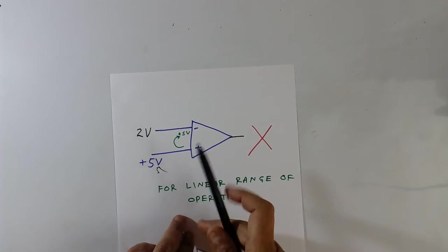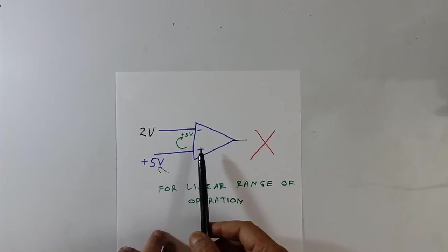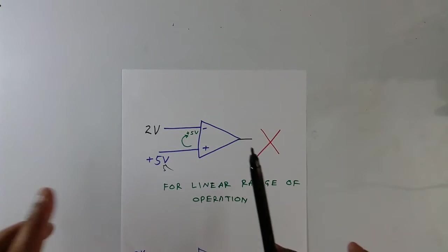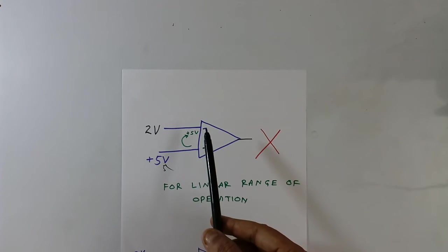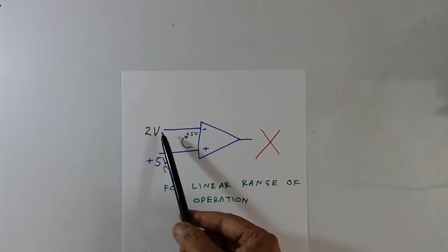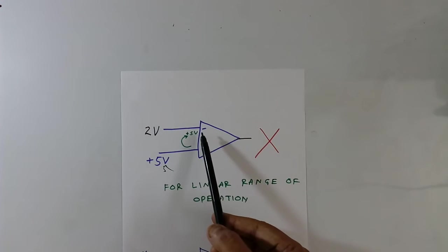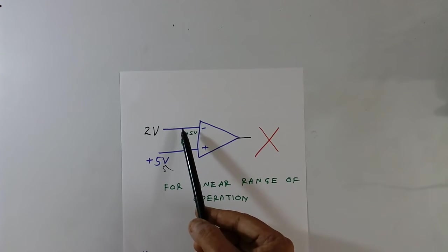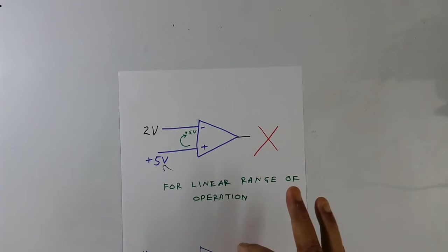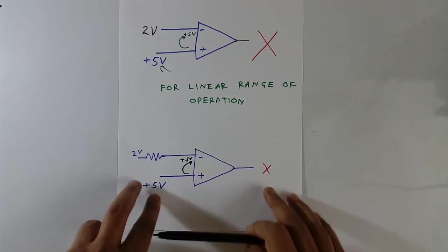See, this is first example. Here positive terminal, I have given plus 5V. Because it has to be linear, we are talking about linear range, this negative terminal voltage also will become plus 5V. And I have given 2V here. This combination is not correct. Here plus 5V, here 2V. So this is wrong. This will not operate in linear range, it will go to saturation.